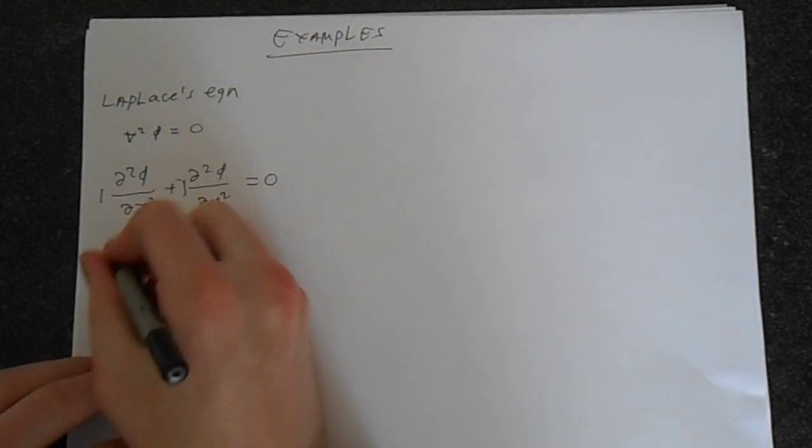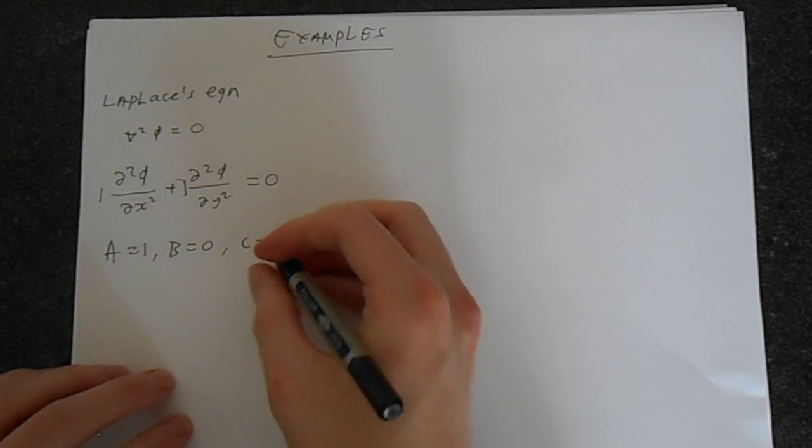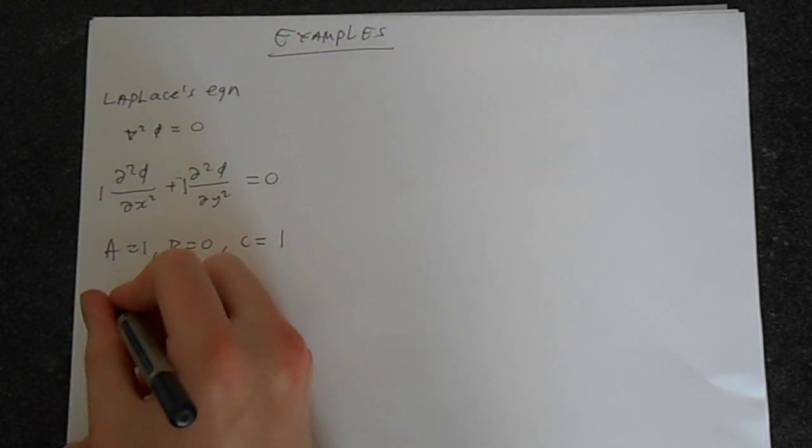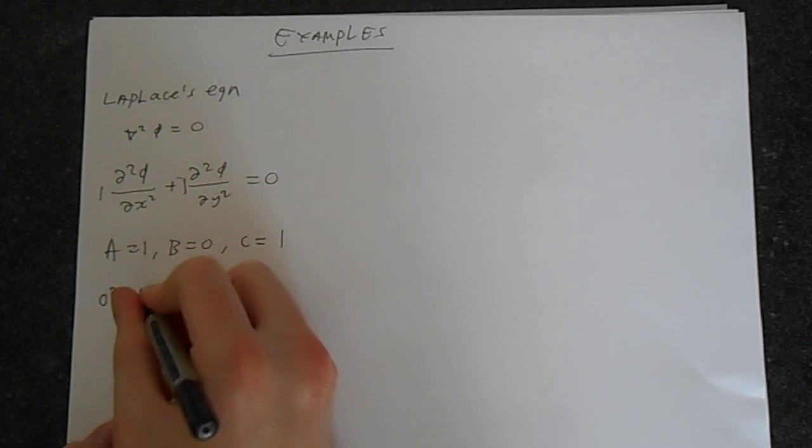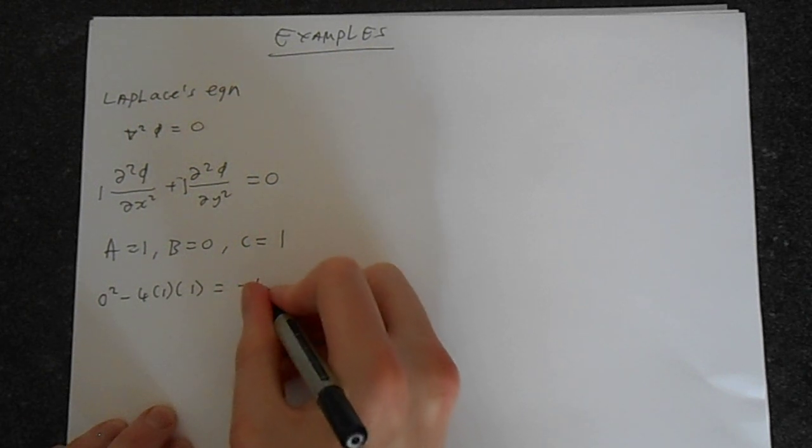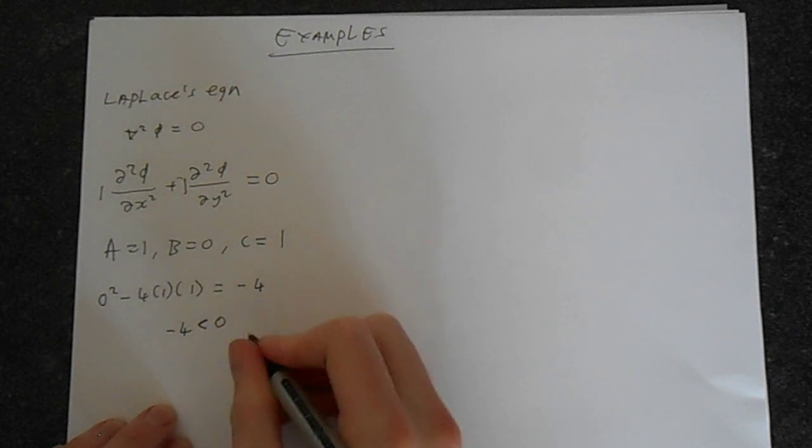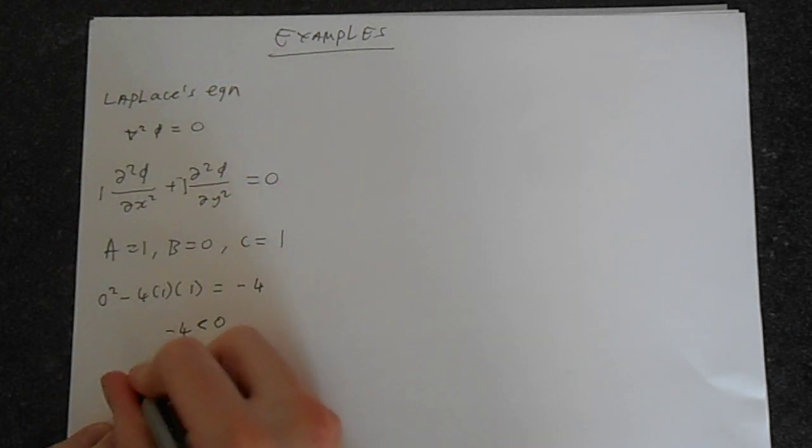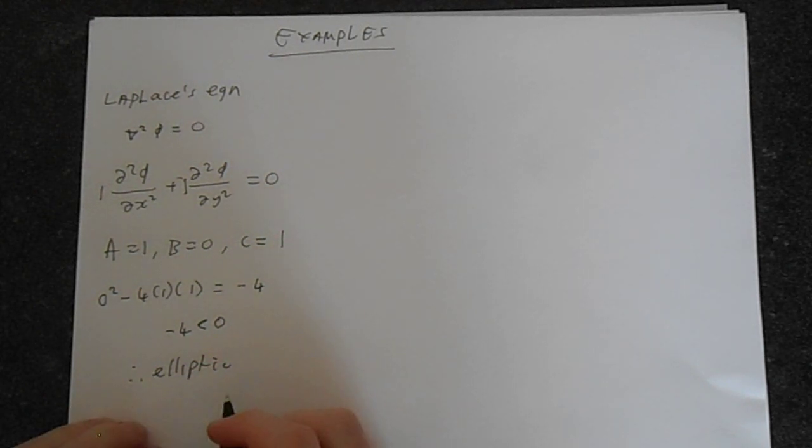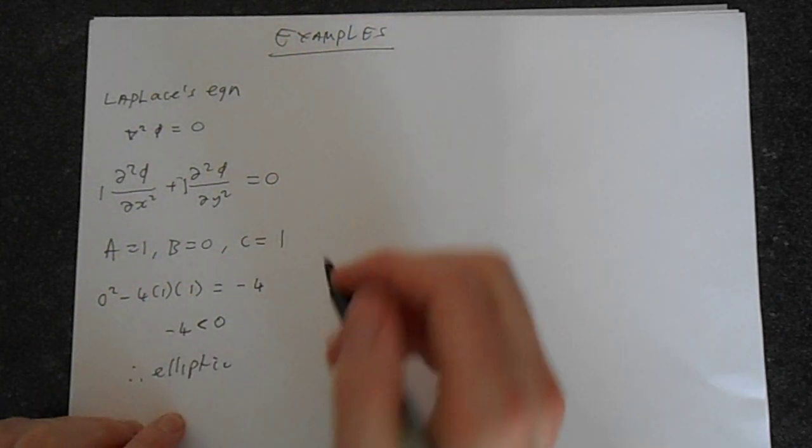Just write that more explicitly, so a equals 1, b equals 0, and c is 1. Okay, so obviously we've got that b squared minus 4 times a times c, that equals minus 4. Minus 4 is obviously less than 0, so it means that Laplace's equation is elliptic, and it has no real characteristics. So that's the important consequence of it being elliptic, not roots, no real characteristics.